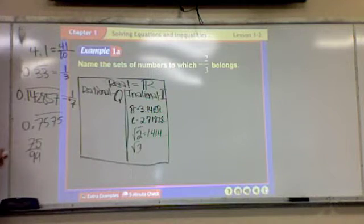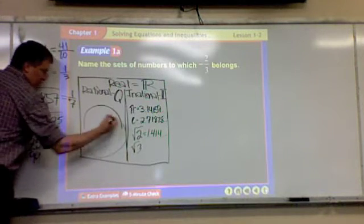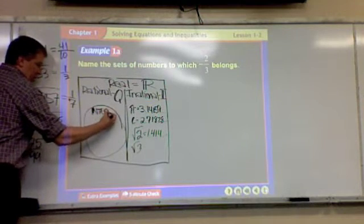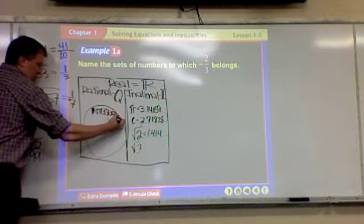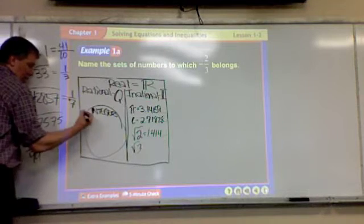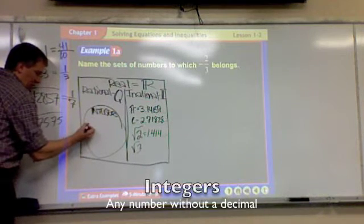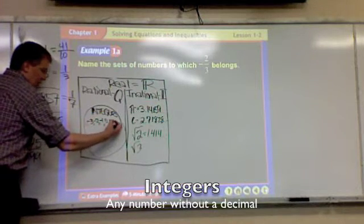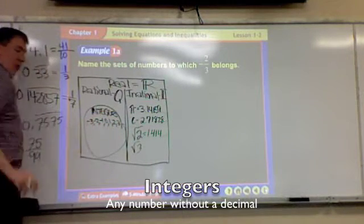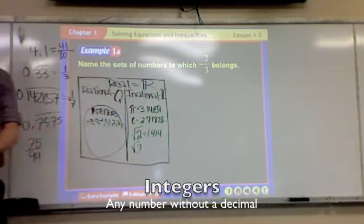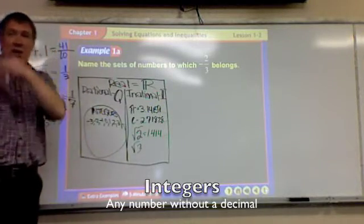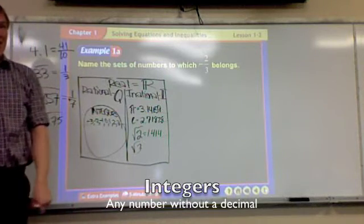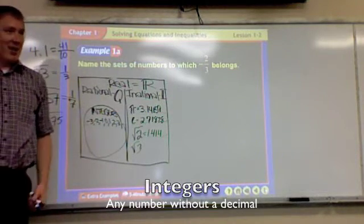So under rational are more numbers, and the first category, the bigger category out of all these is called integers. And integers are any number without a decimal. So examples would be negative 3, negative 2, negative 1, 0, 1, 2, 3, and so on. Both ways. As long as I don't go point and keep going, it's an integer.